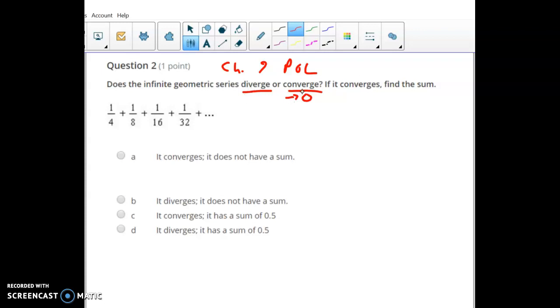If it diverges it won't have a sum because it'll just be infinity, it'll be way too big. For this particular one it is converging, these are getting smaller and smaller and smaller, so the idea is eventually you're basically adding zero, so we can find the sum.